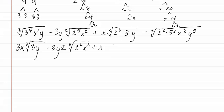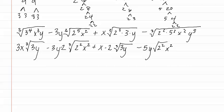Next, two to the third means a two comes out and there are no twos left inside. The three and the y are both exponents of one, so they stay in. For the last term, two squared means neither comes out. Five to the third means one five comes out with none staying in. x squared means both stay in, and y cubed means one y comes out with none left inside.